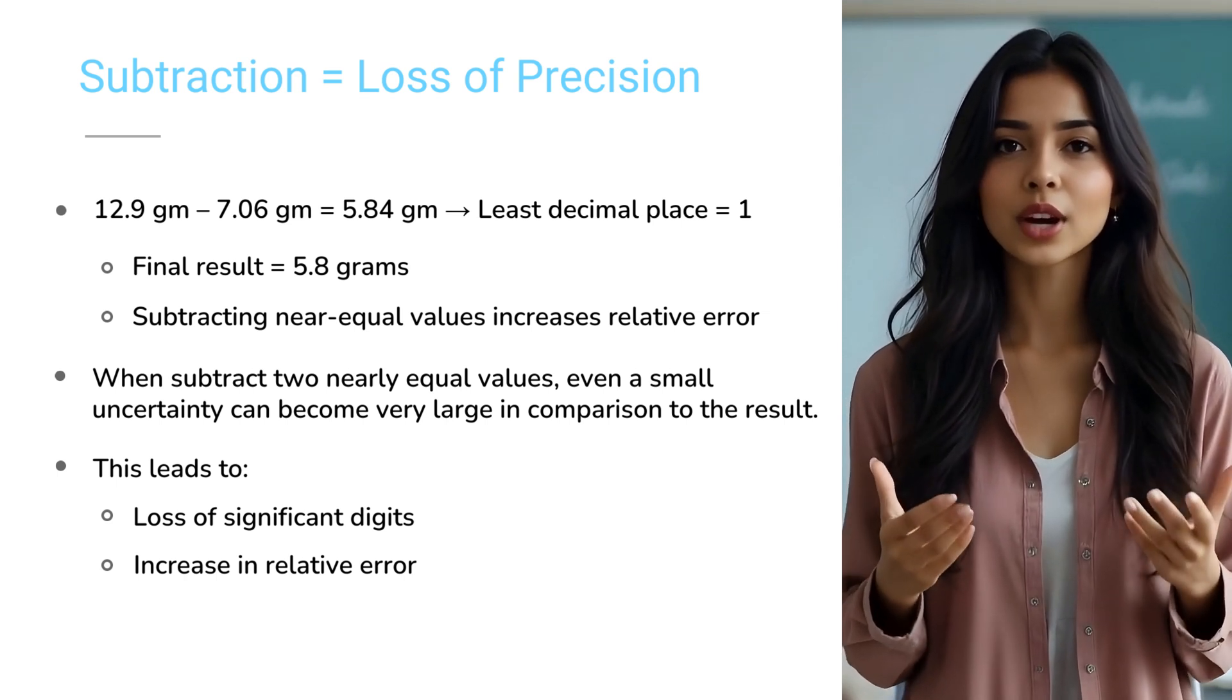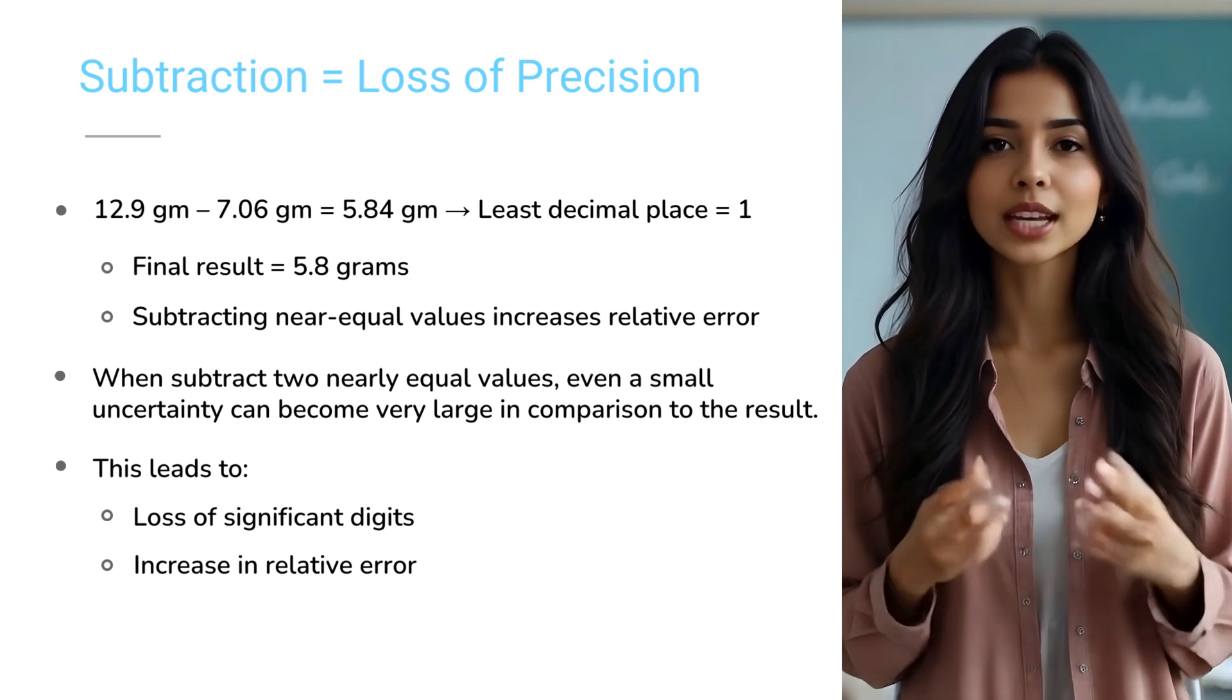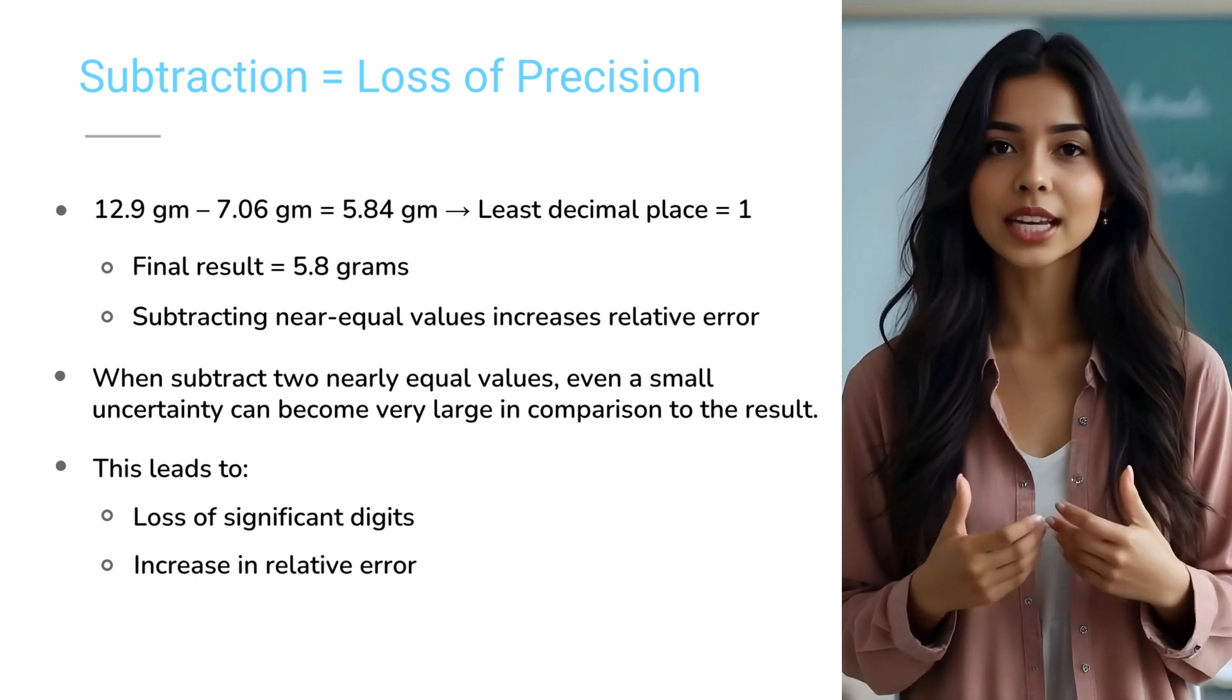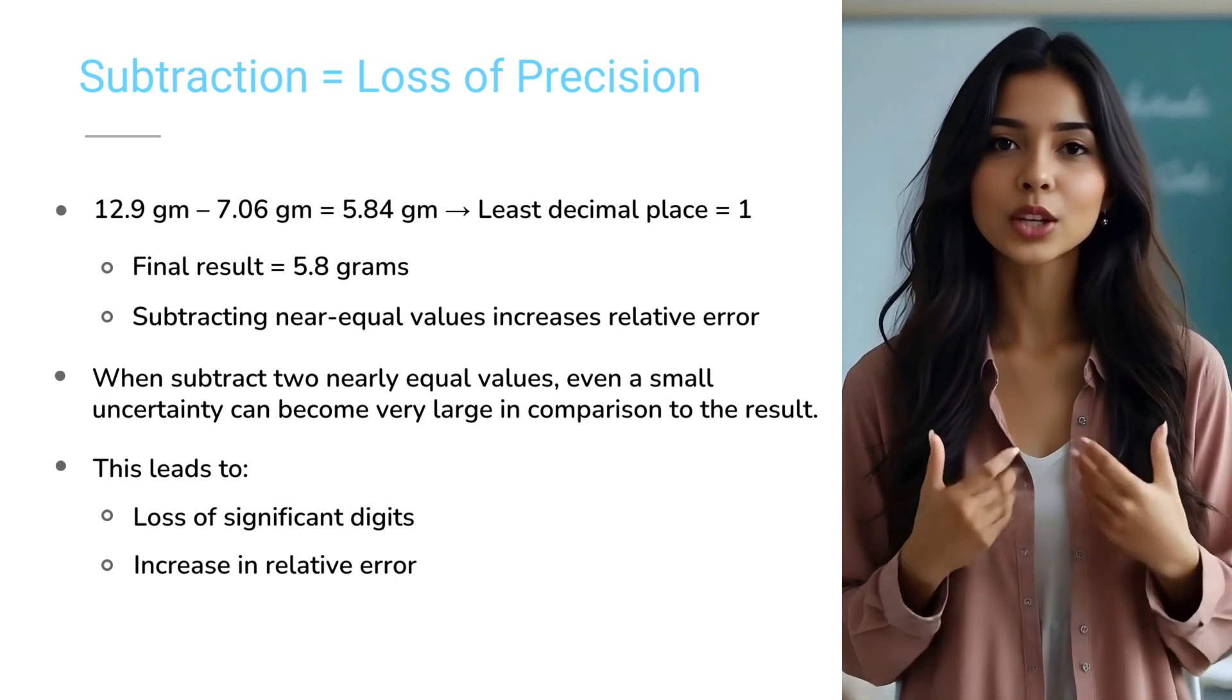In subtraction, the final answer should match the least precise value. That's one decimal place here, so we round. Final answer equals to 5.8 grams. Uncertainty increases when you subtract nearly equal quantities. The relative error becomes larger.